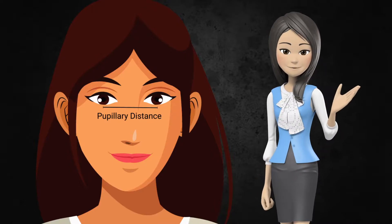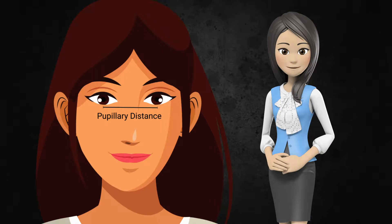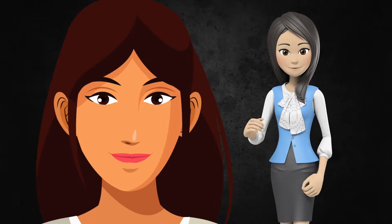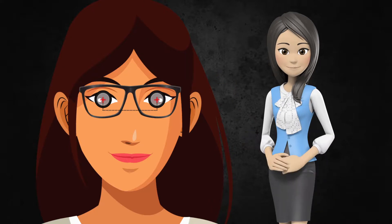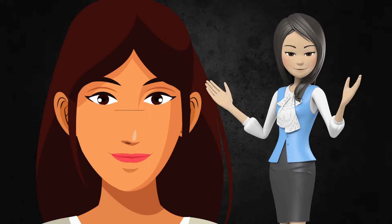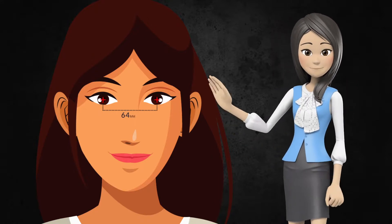PD, or pupillary distance, is the distance in millimeters from the center of one pupil to the other. Your PD is an important factor in ensuring that the center of each lens goes directly over your pupils. Pupillary distance will normally be listed as one number, 64 for example.